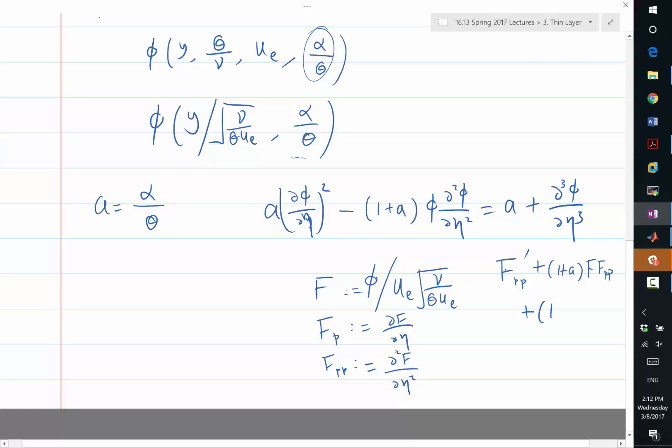So that's this term. Plus 1 plus a times f times fpp. Plus, that's the additional term we are having. 1 minus fp squared times a equal to 0. So that's the new equation we are having. So this is the additional term that comes out from here and here. And there is a 1 plus a inside the f times fpp.